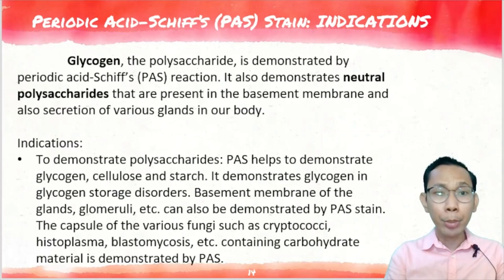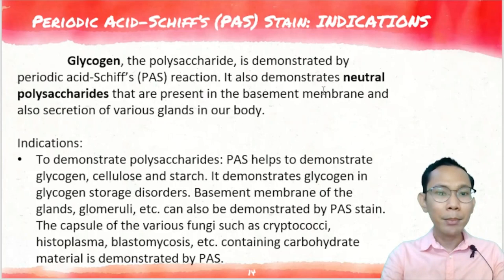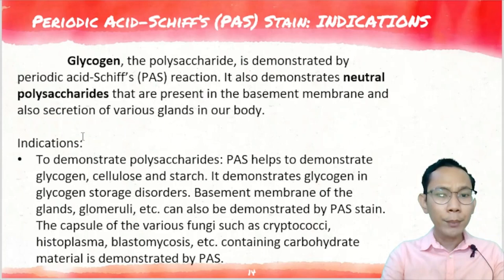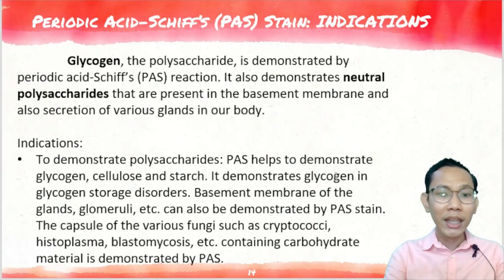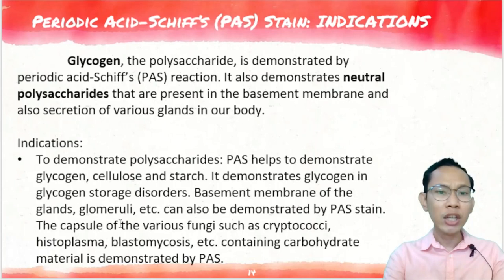Let's discuss first your Periodic Acid-Schiff stain or PAS stain. Your glycogen, which is a polysaccharide, is demonstrated by your PAS reaction. It also demonstrates neutral polysaccharides present in your basement membrane and secretions of different glands. The indications for PAS stain: number one, to demonstrate polysaccharides — PAS helps demonstrate glycogen, cellulose, and starch. It demonstrates glycogen in glycogen storage disorders. Basement membrane of glands, glomeruli can also be demonstrated. The capsule of various fungi such as Cryptococcus, Histoplasma, and Blastomycosis, which contain carbohydrate material, is also demonstrated by PAS.